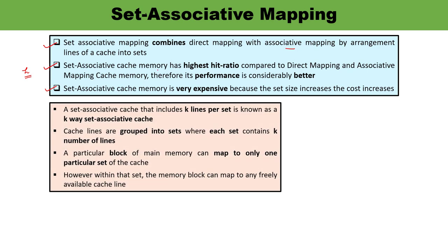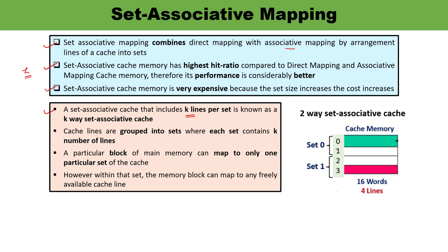As I mentioned, set associative mapping utilizes the properties of both direct and associative mapping. A set associative cache utilizes K lines per set. In general, if there are K lines per set, that is known as a K-way set associative cache. As you can see in this diagram, there are two sets — set 0 and set 1. In each set, there are two cache lines, which means this is a two-way set associative cache. If there are four or eight cache lines in a set, that would be a four-way or eight-way set associative cache. K means the number of lines per set, not the number of sets.